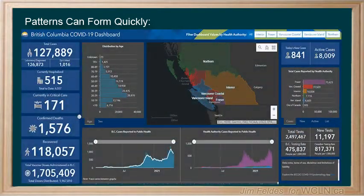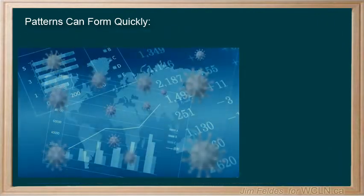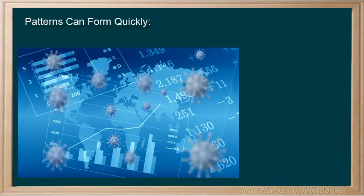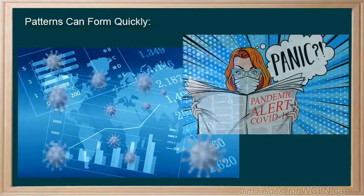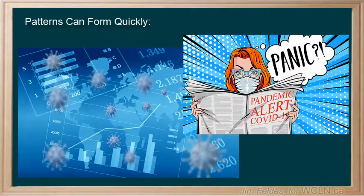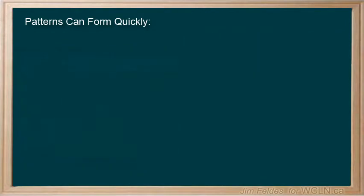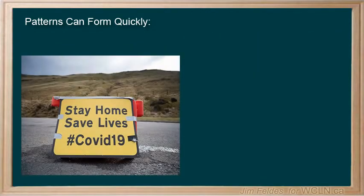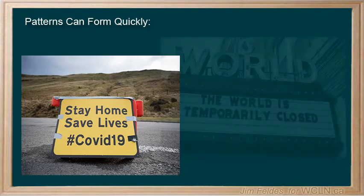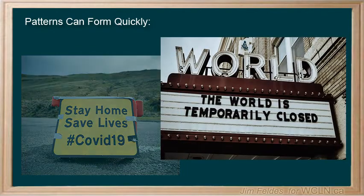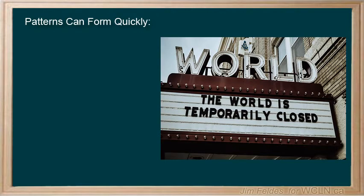News feeds shared endless data on the latest case numbers, hospitalizations, and deaths. Health officials frantically tried to interpret patterns of transmission to guide their decisions and our behavior — informing without alarming. When all else seemed to fail, having us locked down in our homes and distancing ourselves was the directive. This had huge repercussions that will impact us for many years.